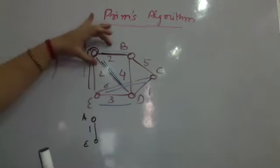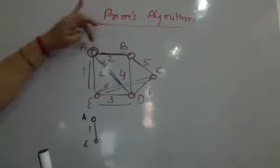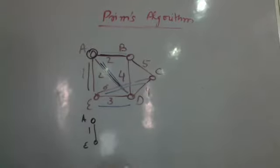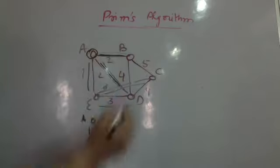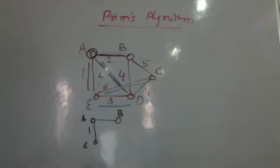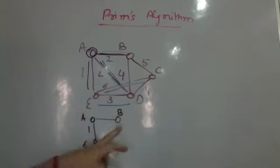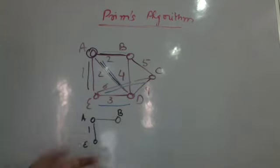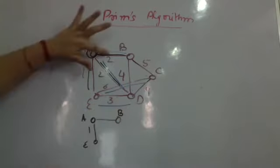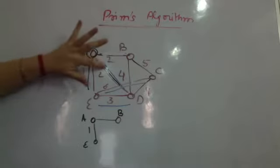I can pick either A to B or A to D since they have the same weight of 2. Randomly I will pick some edge — supposedly I pick A to B — and add it to the graph because B has not yet been covered.